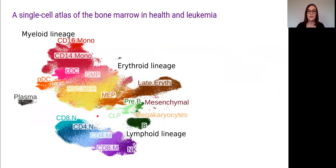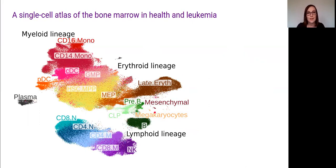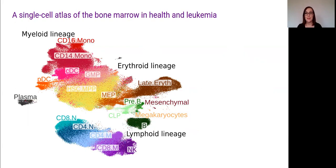We've also managed to identify these really rare cell populations — mesenchymal cells and megakaryocytes. Neither of these populations had been labelled in any of the datasets prior to integration. But that's the benefit of having this really large integrated dataset: there are enough of these rare cell populations that they can separate out and form their own clusters.